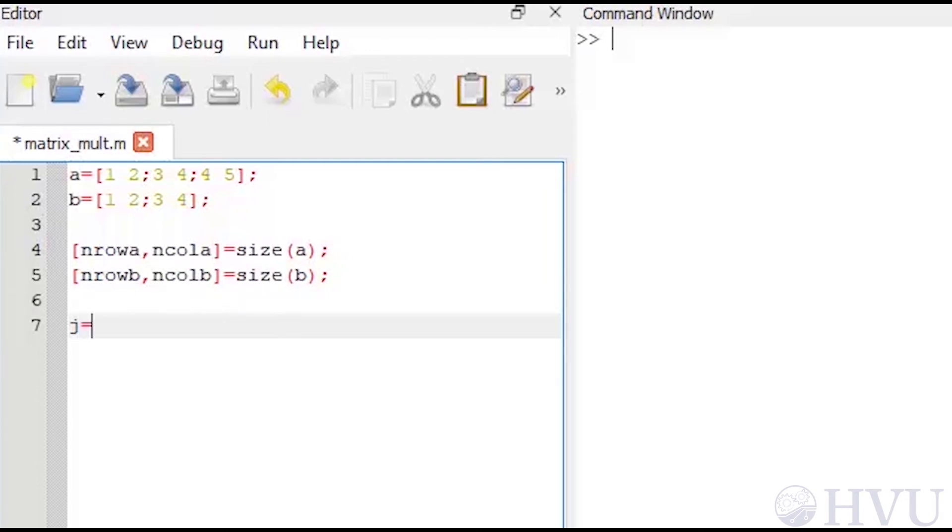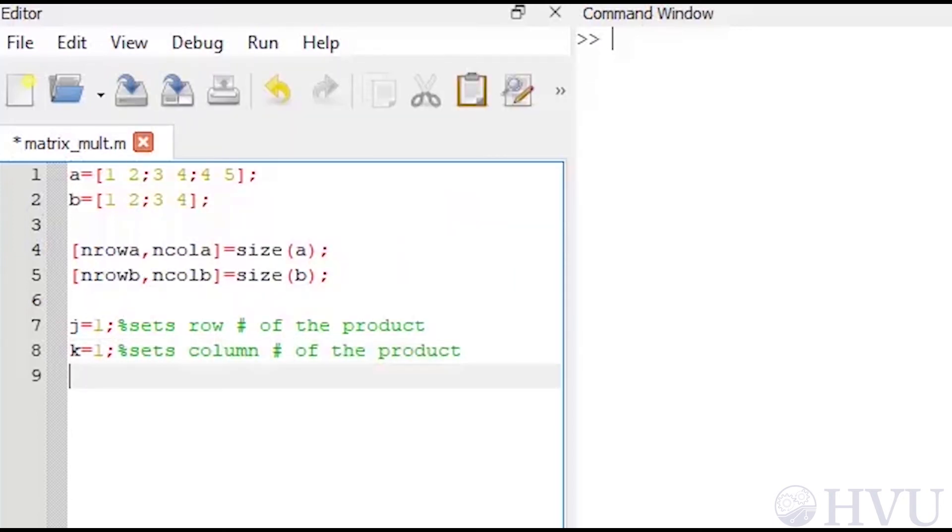To keep things simple at first, I'll just calculate the inner product of ROW 1 of MATRIX A and COLUMN 1 of MATRIX B. I'll use the variable j to represent the ROW of MATRIX A and k to represent the COLUMN of B. The result of the inner product will be in the variable c, so I'll initialize c equal to 0.